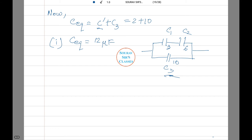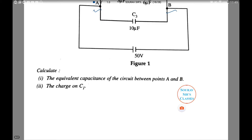The charge on C₁. The charge on C₁ can be calculated as C₁ equals 2 × 10⁻⁶ × 50 coulomb, which is equal to 10⁻⁴ coulomb. And that's the answer. Let's see another question.